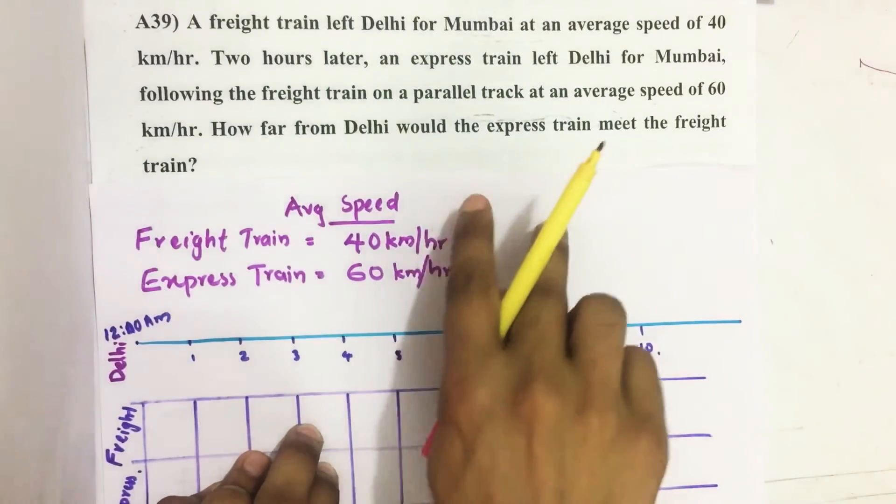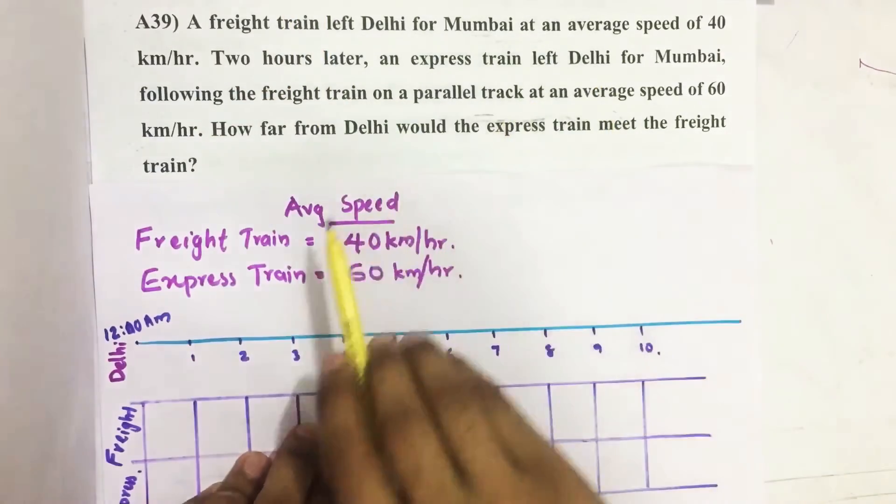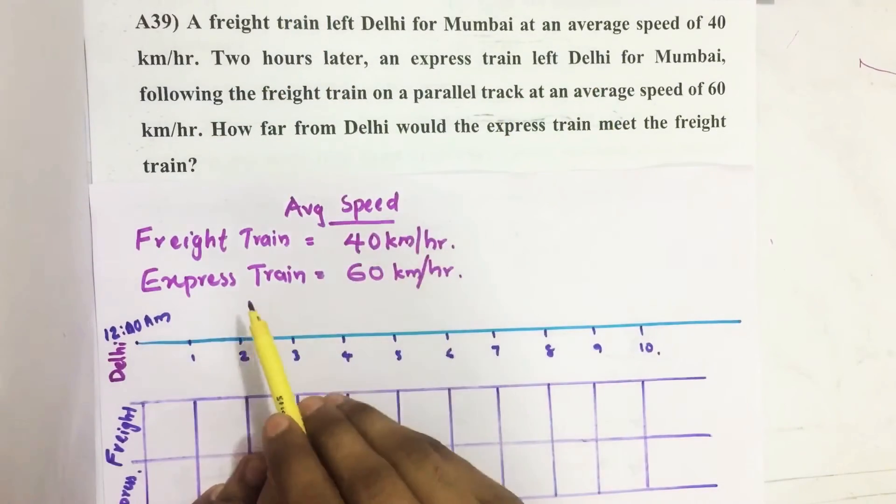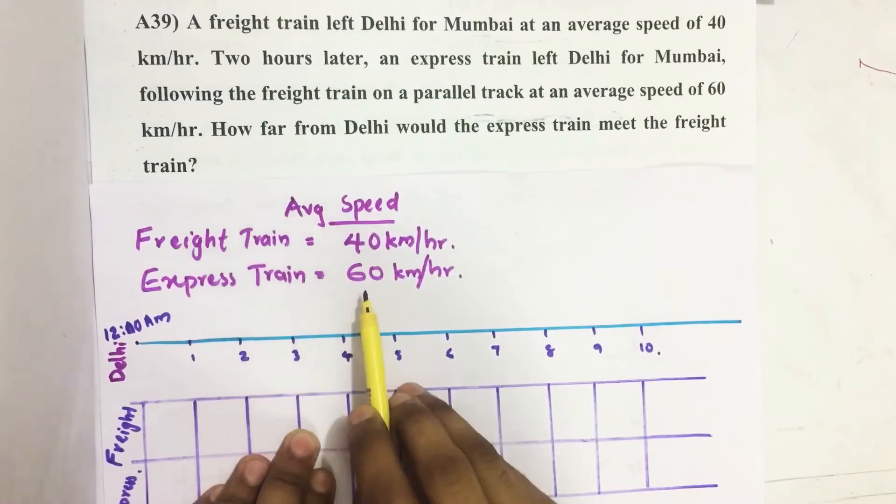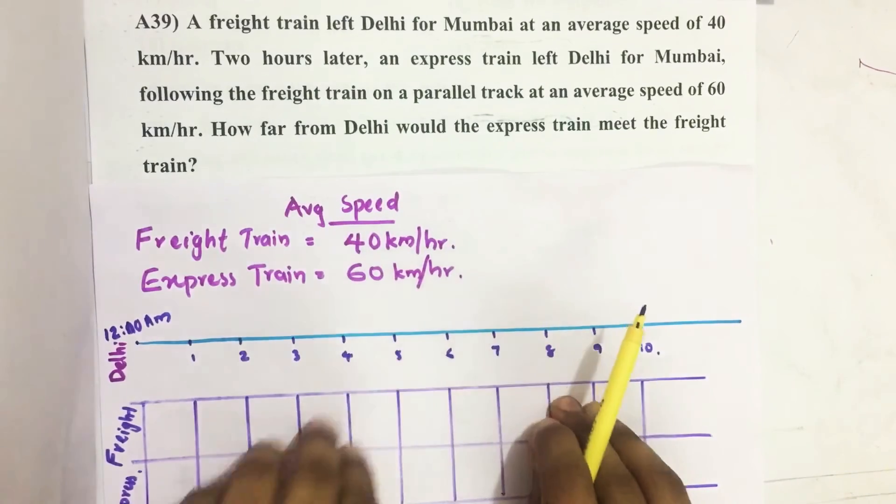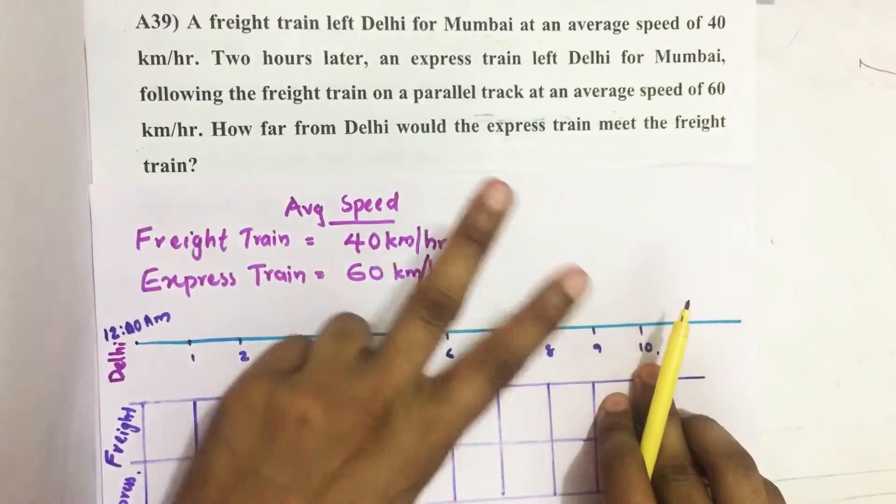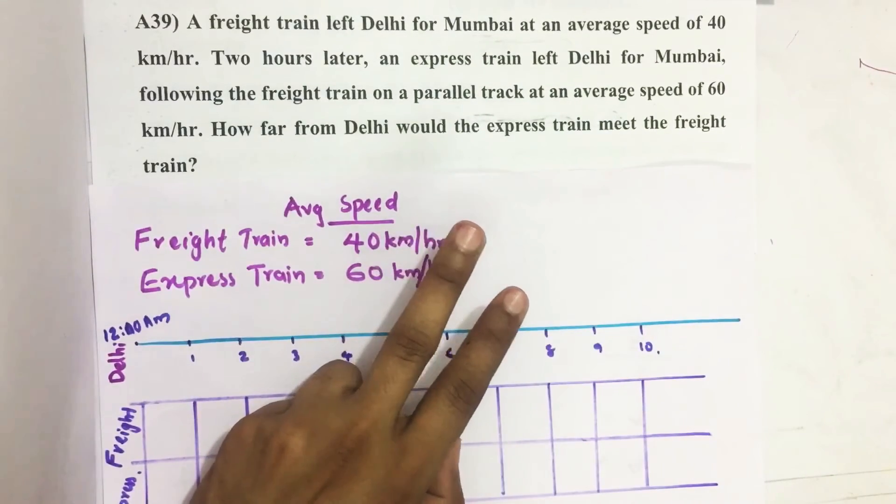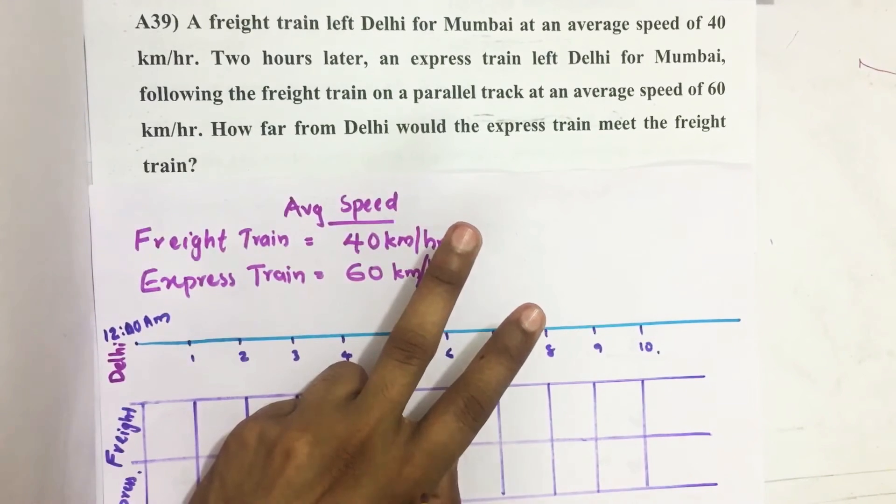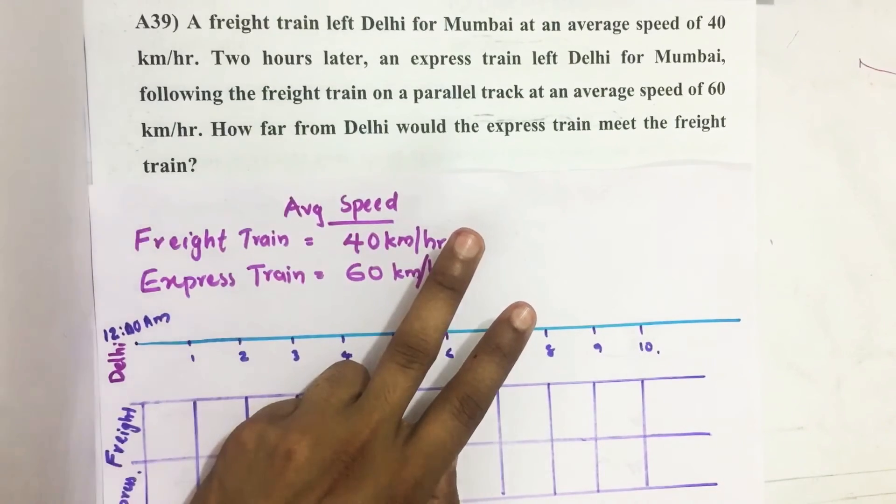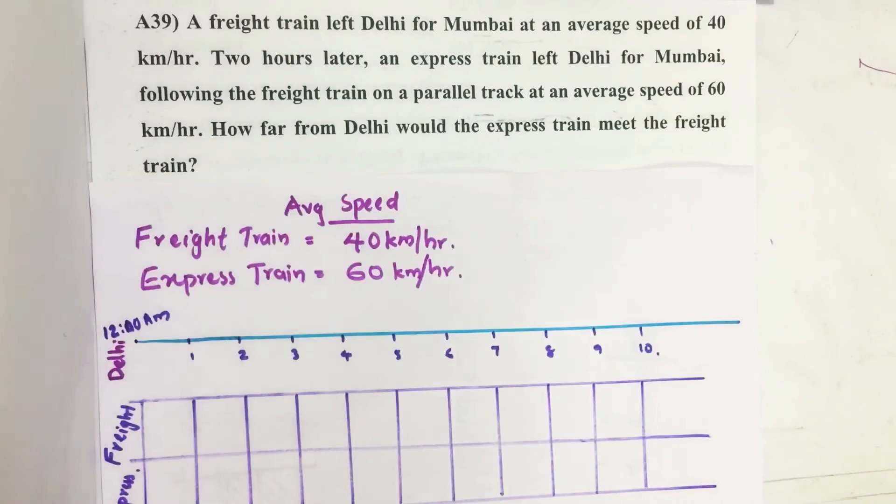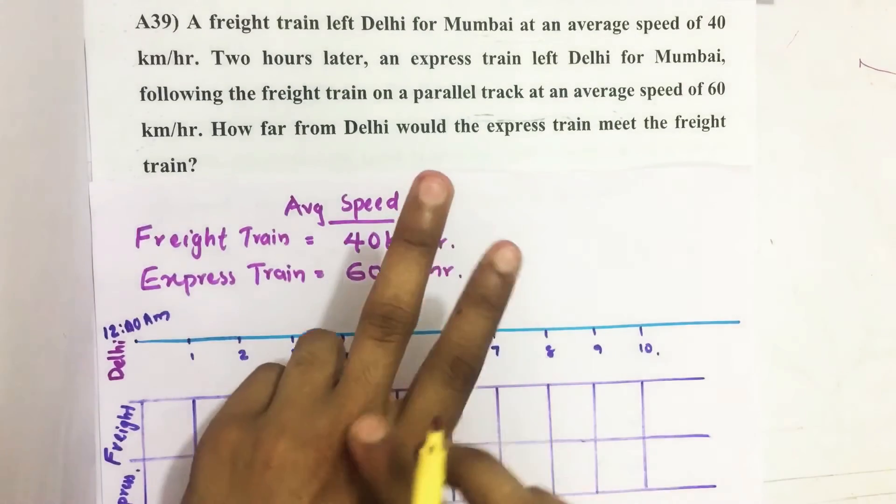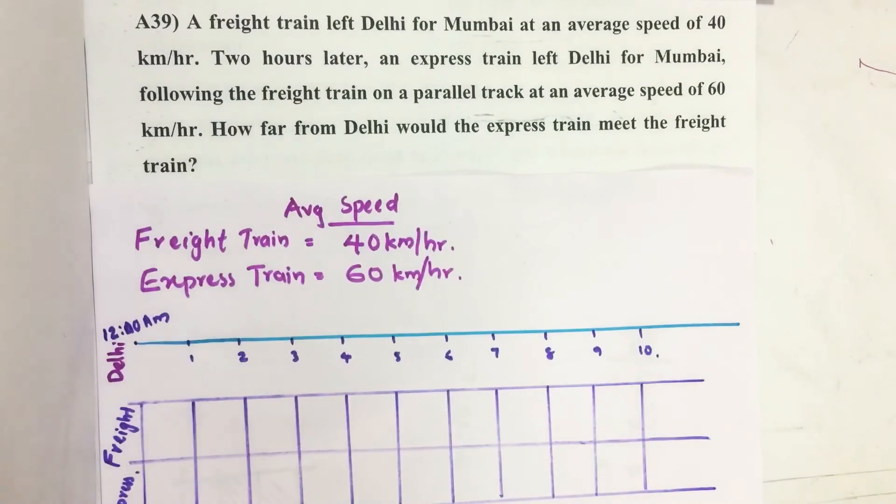There are two trains: one freight train with speed 40 km per hour and one express train with speed 60 km per hour. They are moving on two parallel tracks and the express train starts its journey after two hours of the freight train starting. We have to find when these two trains meet.